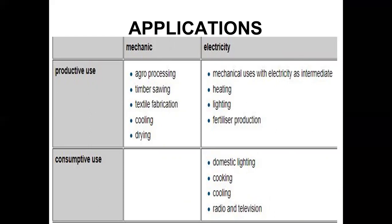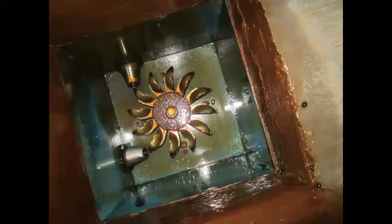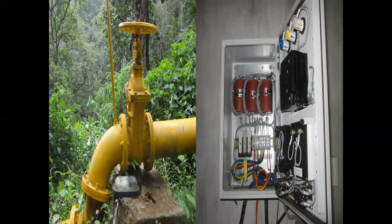These pictures are from my own visit to Komaligudi, Munnar, where I was part of a project constructing a micro hydro power plant for tribal people. You can see the penstock, the Pelton wheel constructed there, and the controlling unit. It is located inside a forest area in Munnar — the project was commissioned about four to five years ago by senior students.